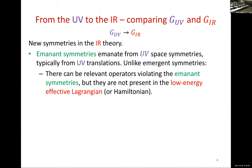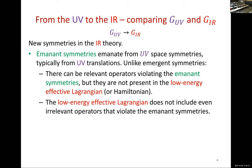For example, there can exist relevant operators violating the eminent symmetry, but they are not present in the low-energy effective theory. So the low-energy observer says: we have this symmetry — it could be violated by some relevant operators, but it's not. There are relevant operators that could violate it, but these operators are not present in the IR theory. And more interestingly, there aren't even irrelevant operators that violate it. If we go a little bit higher in energy and explore the irrelevant operators in the low-energy theory, even these operators do not violate the eminent symmetry.